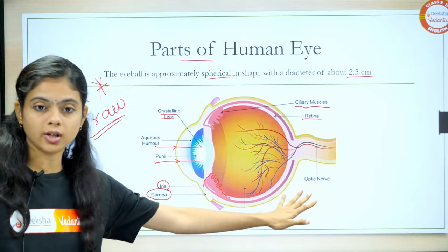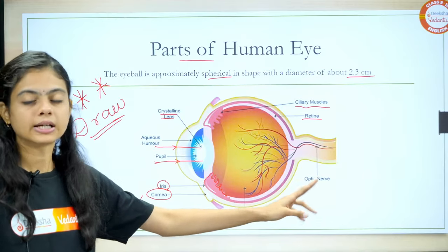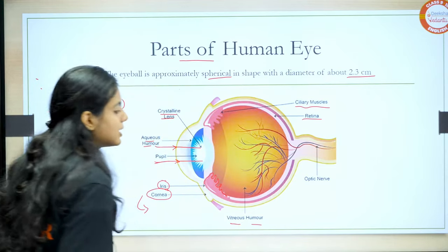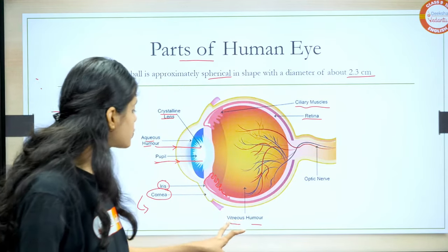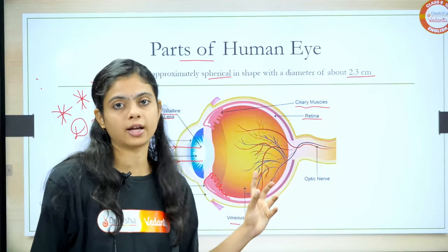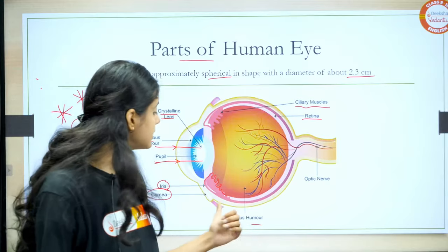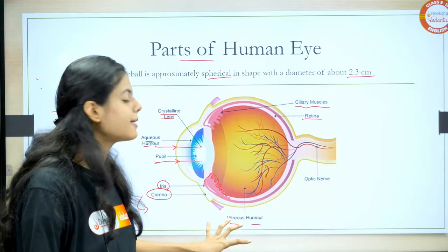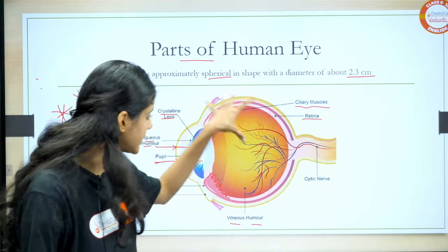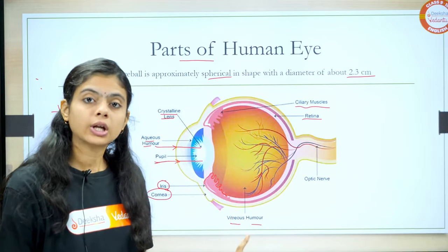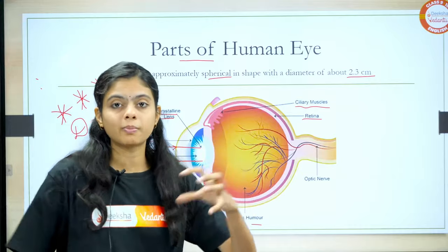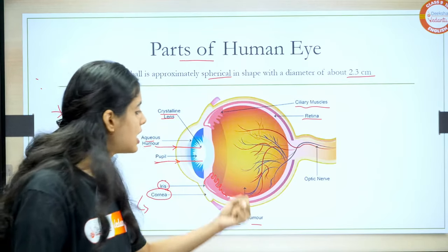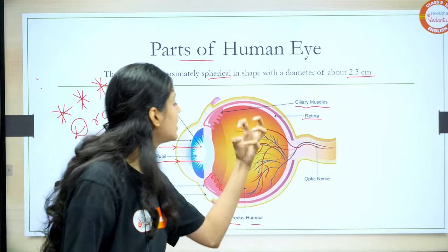There are still more points about ciliary muscles that we'll discuss in further slides. Coming to aqueous humor and vitreous humor — these are kinds of fluids. The vitreous humor is filled throughout the human eye. What is its function? Why is it required? It helps the eye maintain its shape. Without vitreous humor, our eye will not be spherical-shaped or a rigid structure — it will shrink.